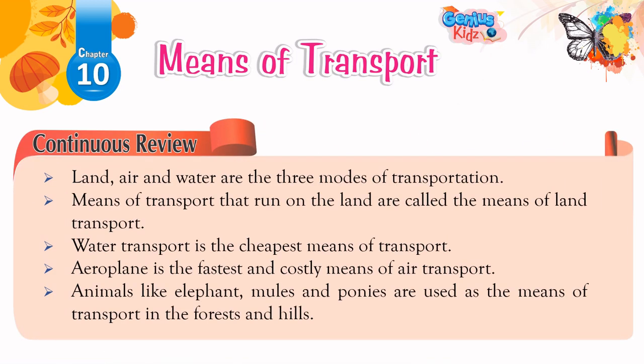Continuous Review: Land, air, and water are the three modes of transportation. Means of transport that run on land are called the means of land transport. Water transport is the cheapest means of transport. Aeroplane is the fastest and costliest means of air transport. Animals like elephants, mules, and ponies are used as means of transport in forests and hills.